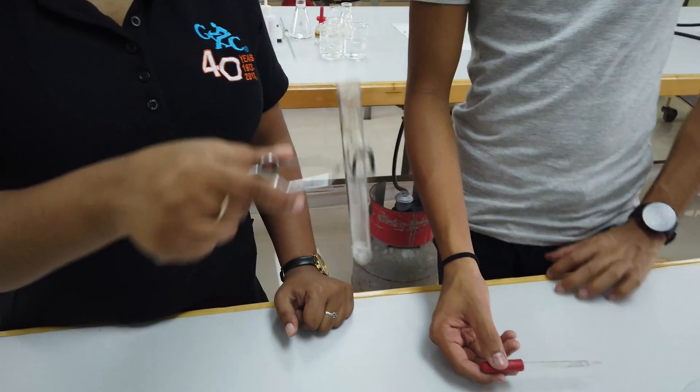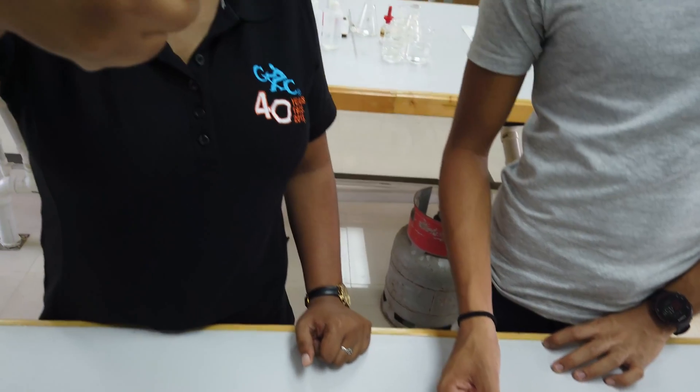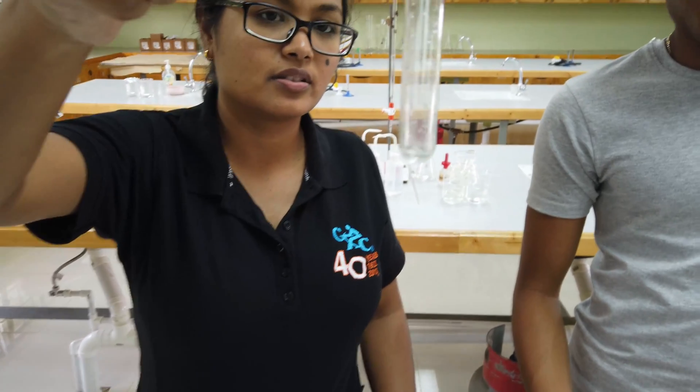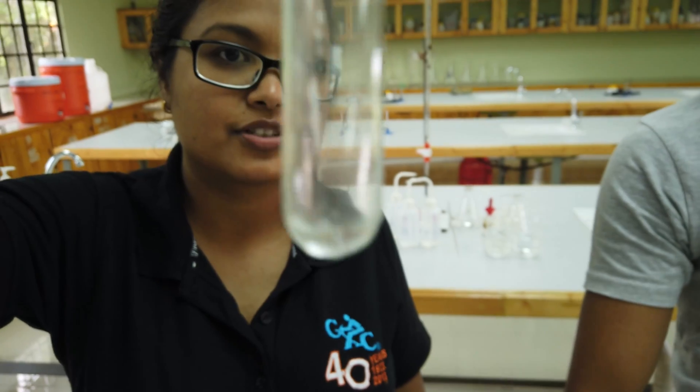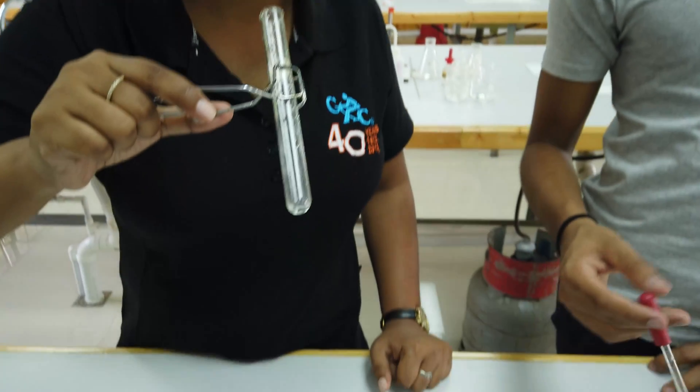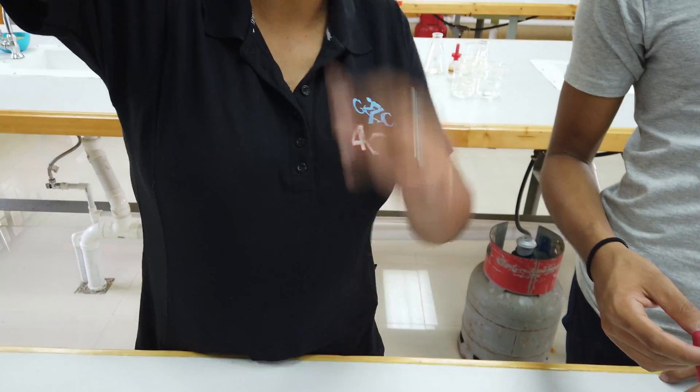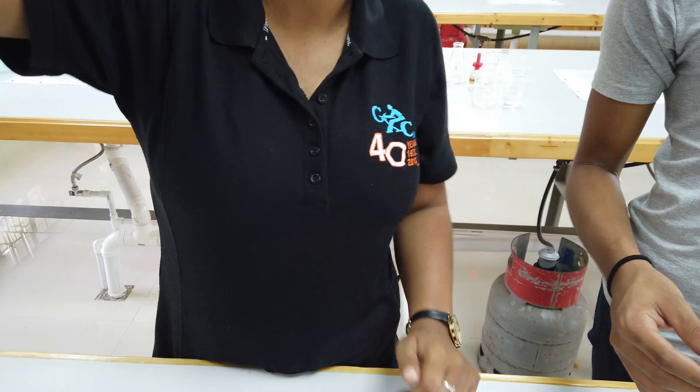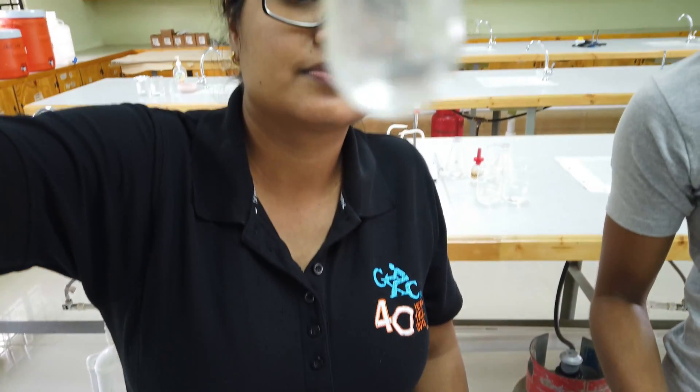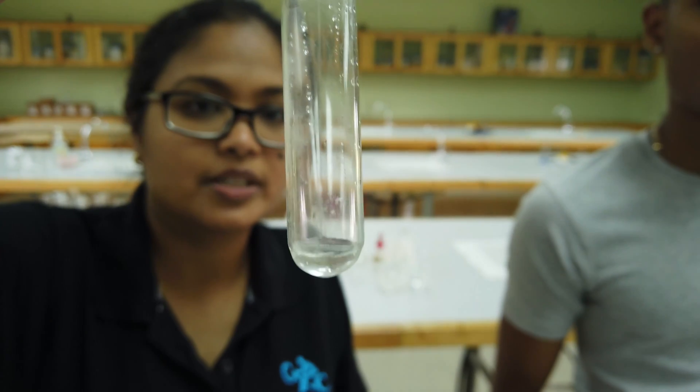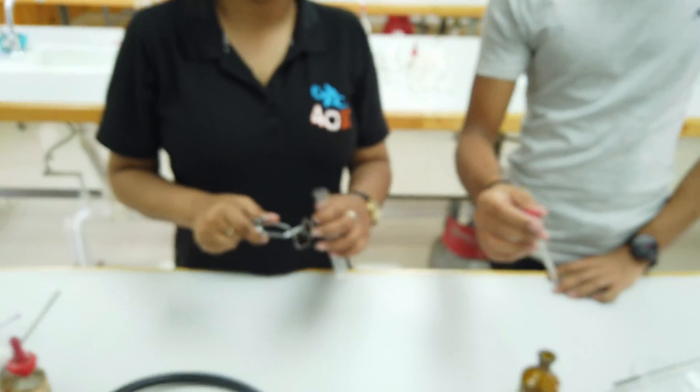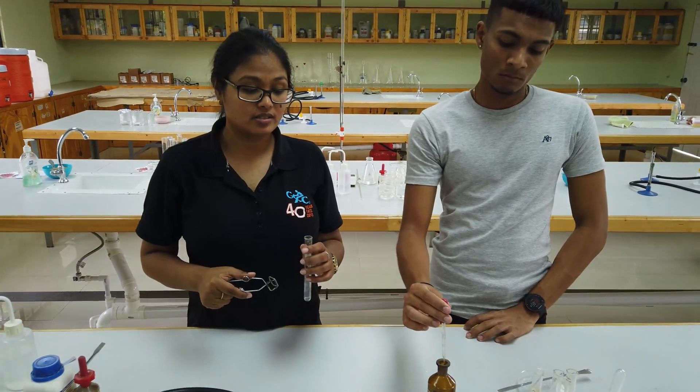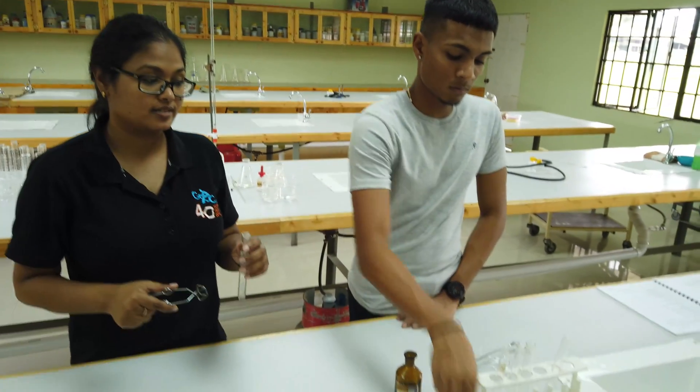See on the bottom of the test tube it's starting to dissolve? Actually almost completely dissolved. So no chloride, bromide, or iodide ions are present. If none of these things are present, then we need to go ahead and test for nitrate.